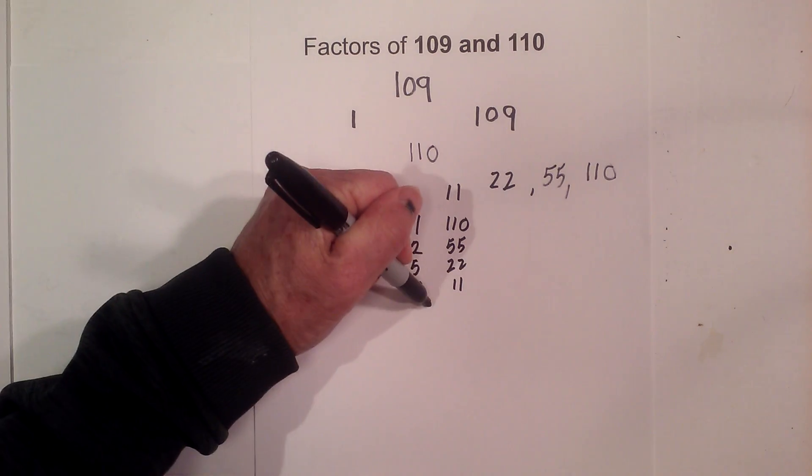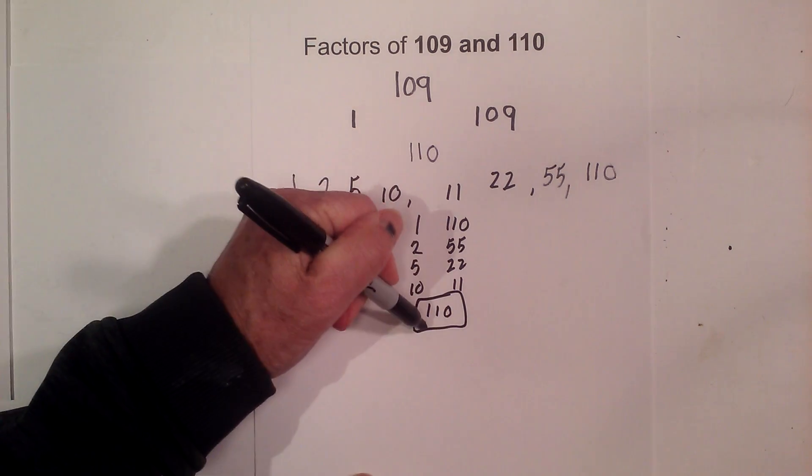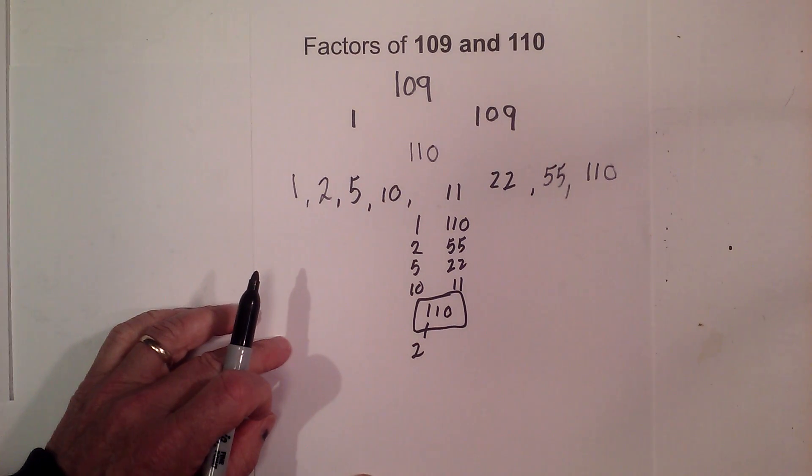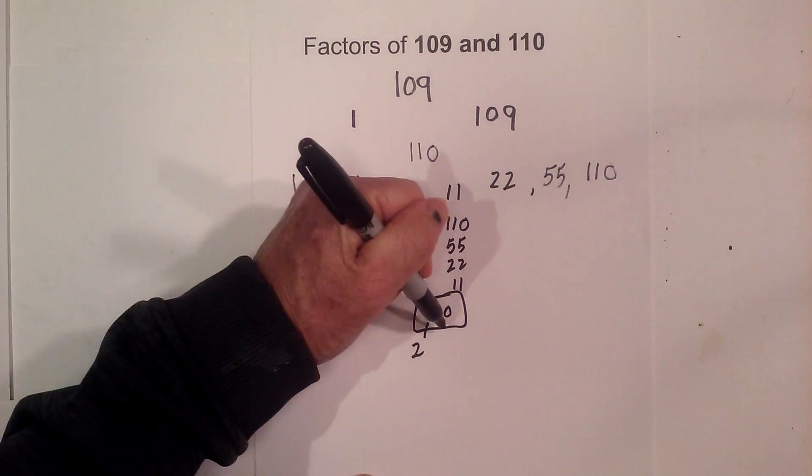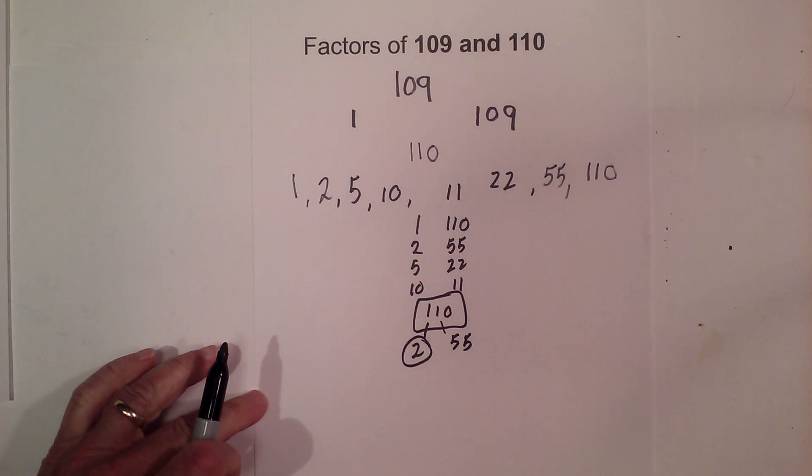Now let's complete a factor tree in order to find the prime numbers. Let's begin with 2 because it ends in a zero, even number. 2 times 55 equals 110. Circle the 2 because it is prime.